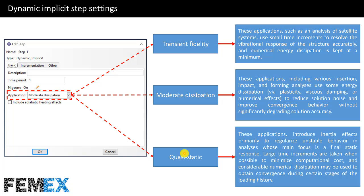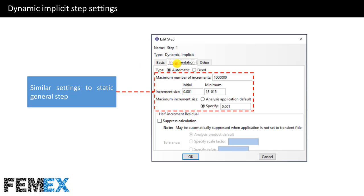The final state is Quasi-static. It must be used in analyses which introduce inertia effects primarily to regularize unstable behavior in analyses whose main focus is a final static response. Large time increments are taken when possible to minimize computational costs, and considerable numerical dissipation may be used to obtain convergence during certain stages of the loading history.